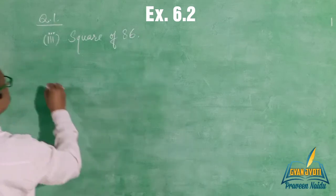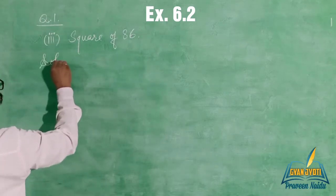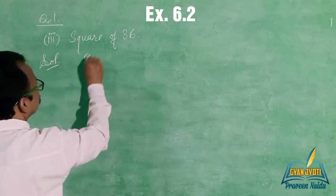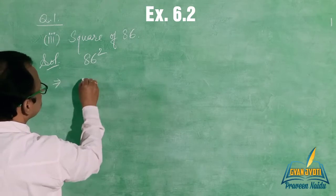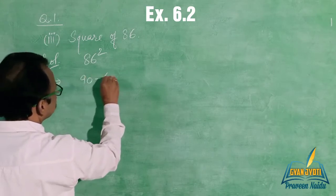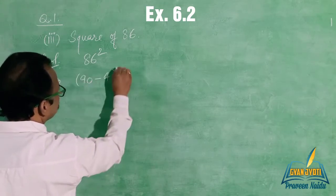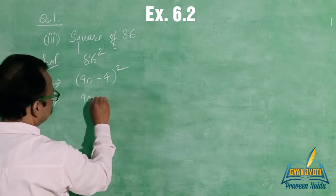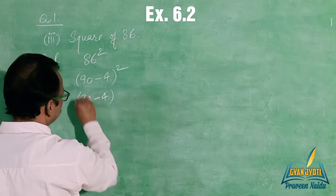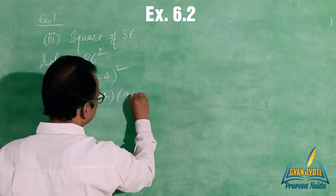Now, square of 86. 86 can be written as 90 - 4, so we multiply (90 - 4) by (90 - 4).